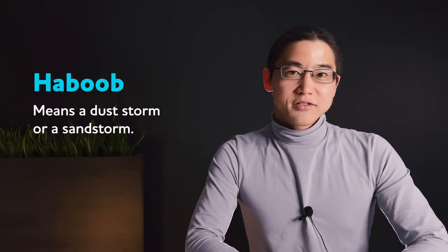Speaking of sand, we have our next word, haboob. Haboob is a type of sandstorm or dust storm. Haboobs don't just happen on Earth. They have been recorded on other planets and celestial objects, such as Mars and Titan.